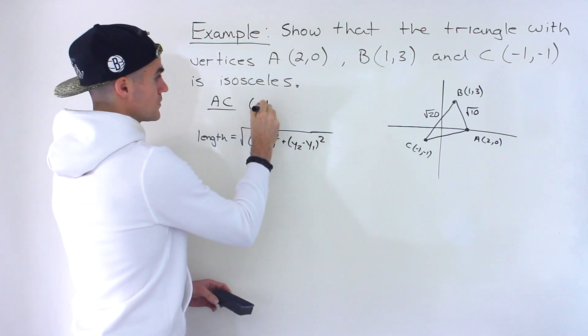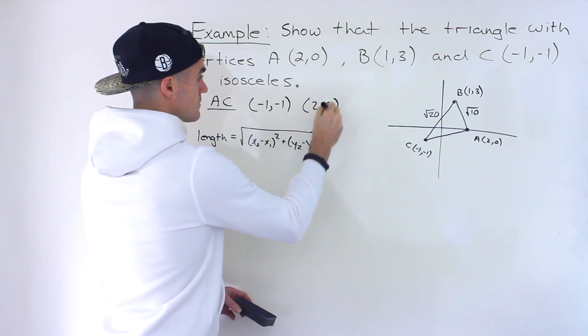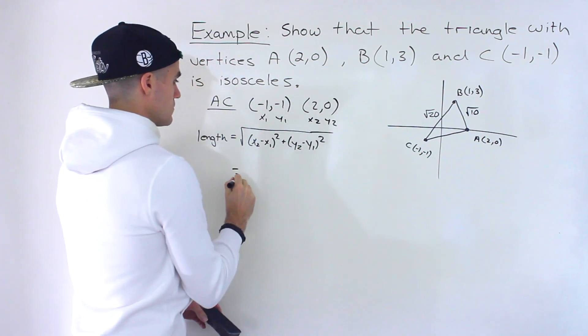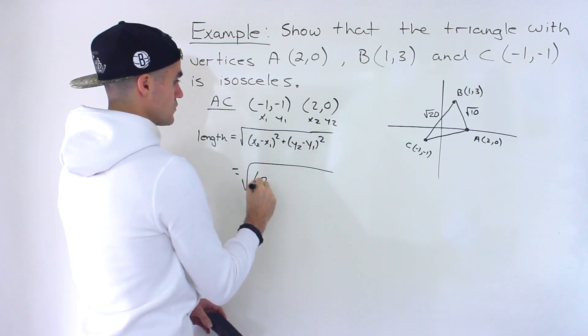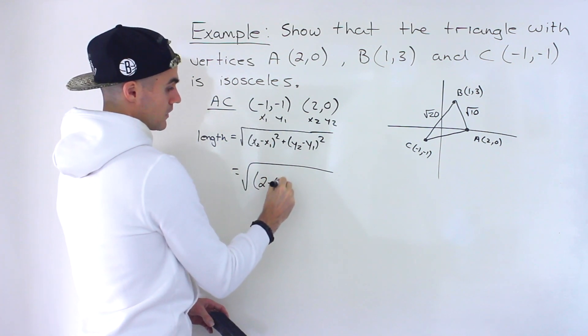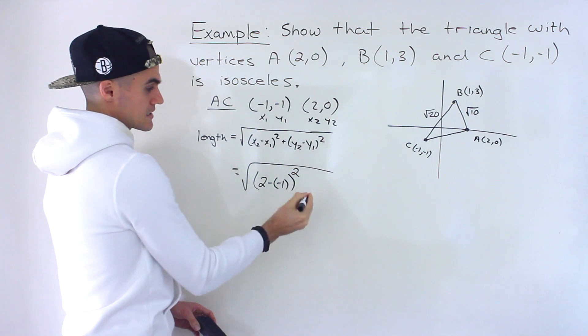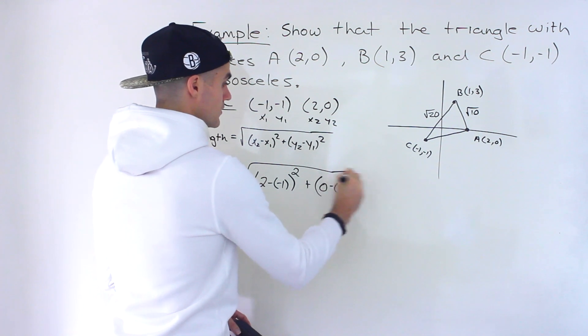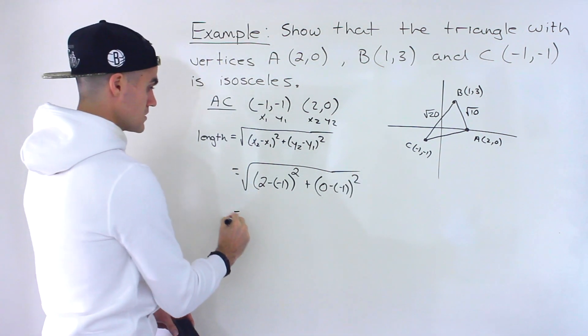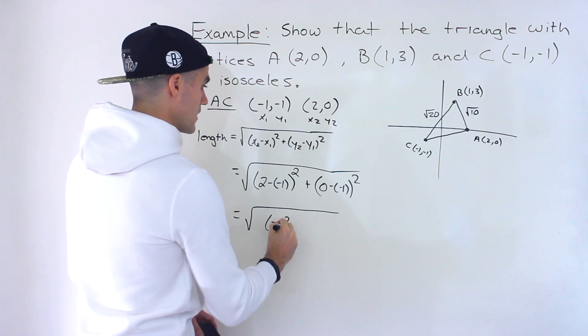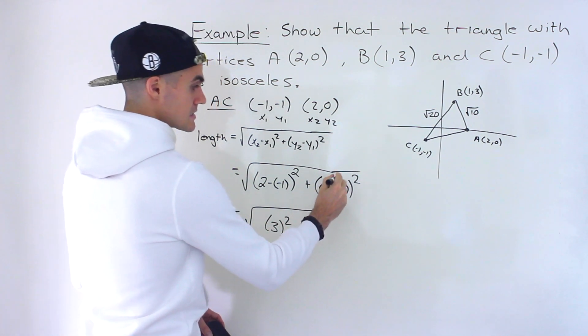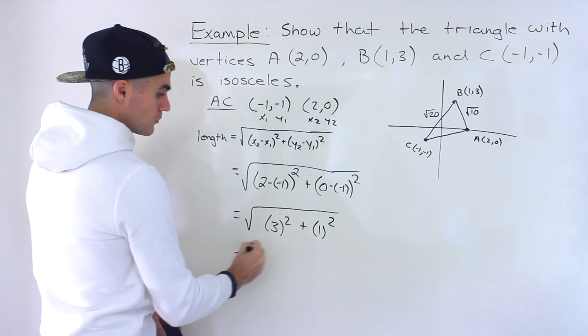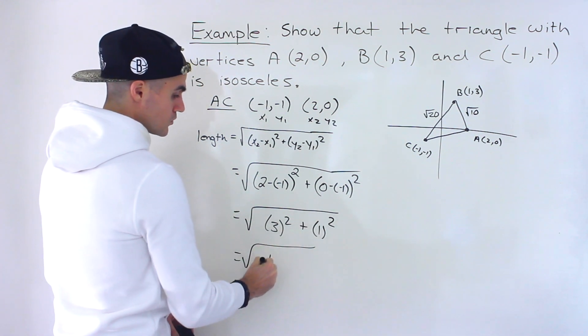That would be the third side, so we'll use points (-1,-1), (2,0), so we'll have x₁ y₁, x₂ y₂. And so we would have x₂, which is 2, minus x₁, which is -1. Make sure you put that in brackets, and then that's going to be squared, so this would end up being 3², plus 0 minus -1 would be like 0 plus 1, which would give us 1. That's going to be squared, so we'd end up with 9 plus 1, which would give us 10.